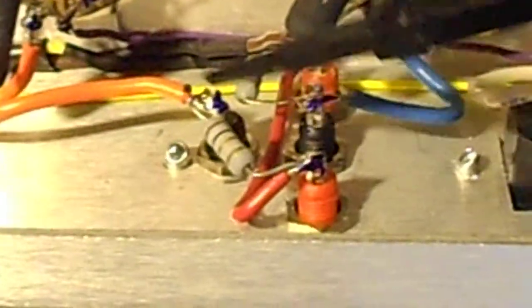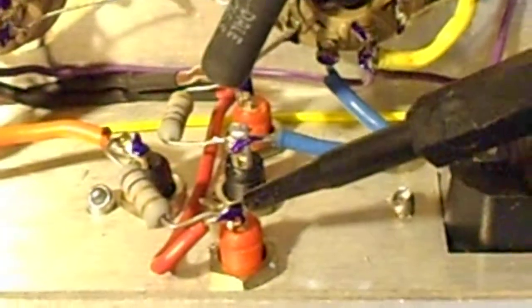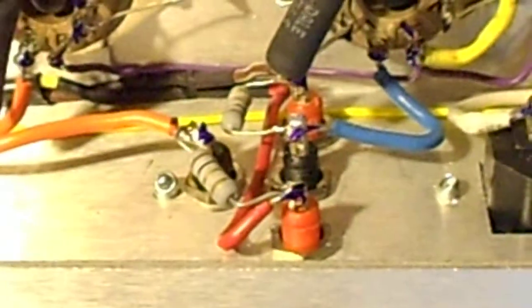Similarly with the other power tube, pin 3, I've got the orange wire going to one end of the input end of the 1 ohm resistor, which goes to the output terminal. And then I have a red wire going to the output transformer.